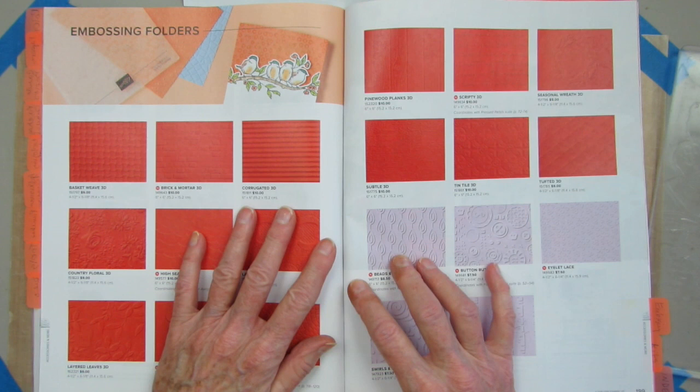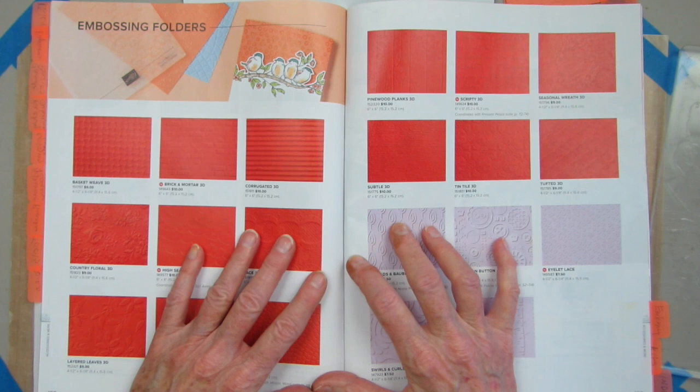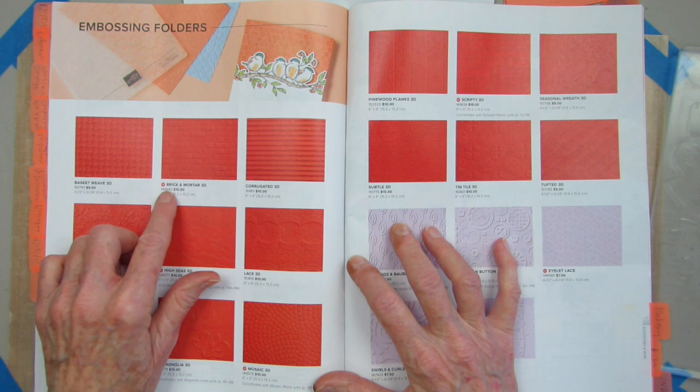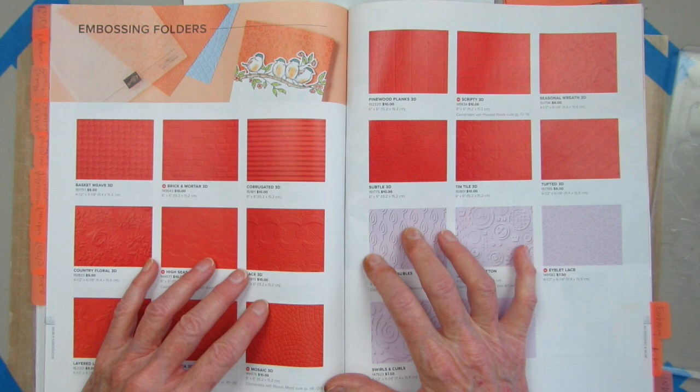At this time, the only 3D embossing folders that are available are the brand new ones. In the catalog, they have a little red circle with the letter N in them. Stampin' Up! says they don't have a date for when the carryover 3D folders will be available.